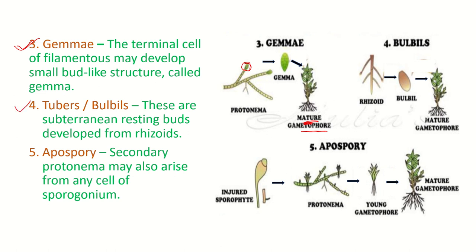The fourth method is by tubers and bulbils. Gemmae are formed on chloronemal branches; similarly, bud-like structures can also be produced on rhizoids, and these are known as bulbils or tubers, which can also give rise to mature gametophores. The difference: the term 'gemmae' is used when bud-like structures form at the apex of chloronemal branches, while 'bulbils' or 'tubers' refers to similar structures formed on rhizoids.